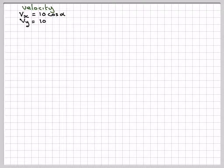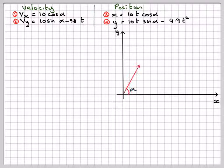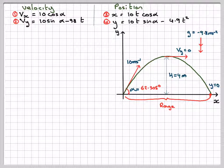Writing down the equations of motion again and drawing the graph. At this particular point, because we have to find the range, the Y component of the position will be equal to 0.